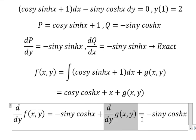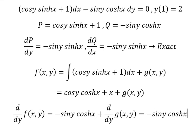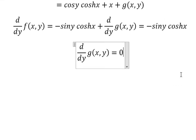Now we simplify for the both sides and we have d/dy g(x,y) equals zero.